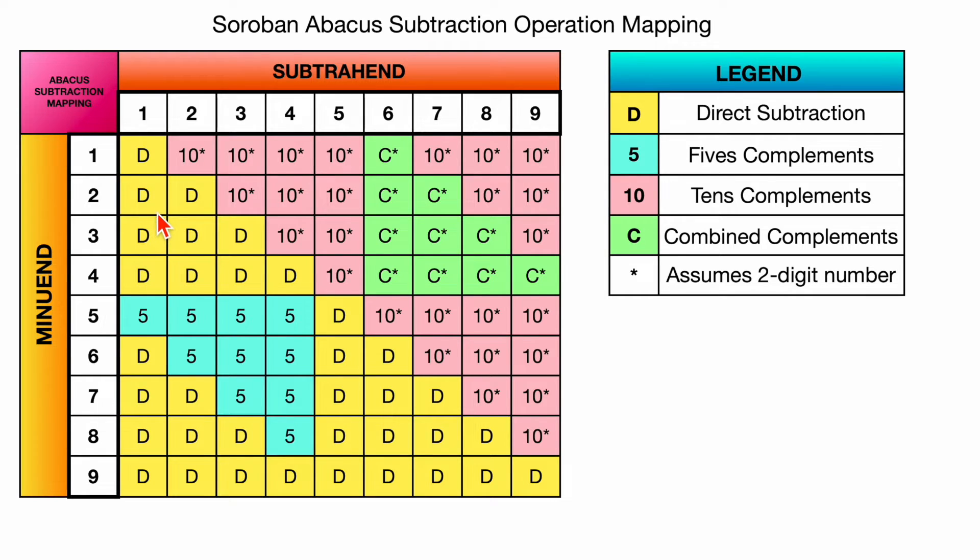So we'll start with direct subtraction. All these problems that are listed in yellow with a D mean that you can directly do them without any other manipulations. So for instance, down here on the, if you start with seven, you can directly subtract one, two, five, six, or seven.